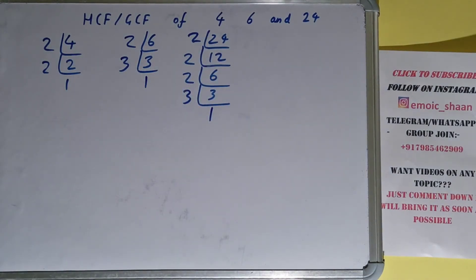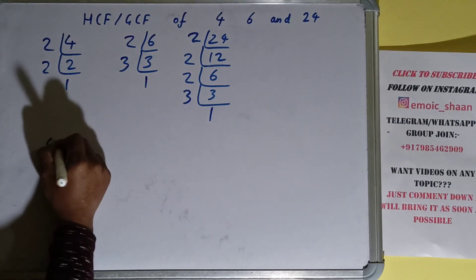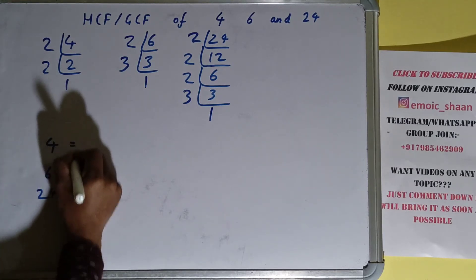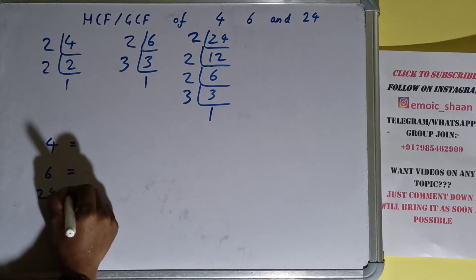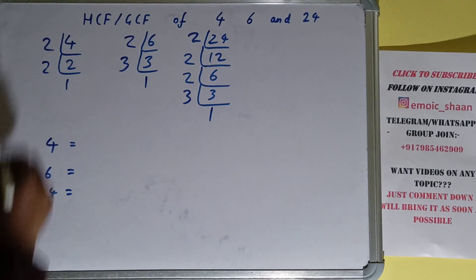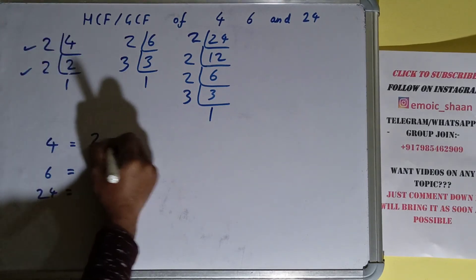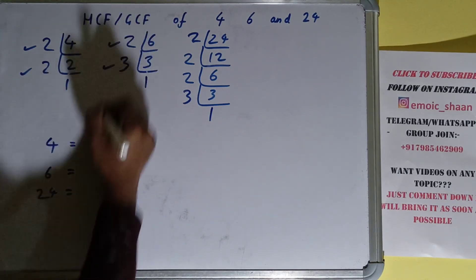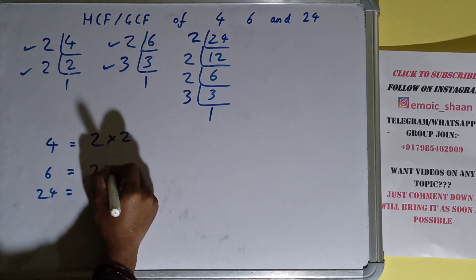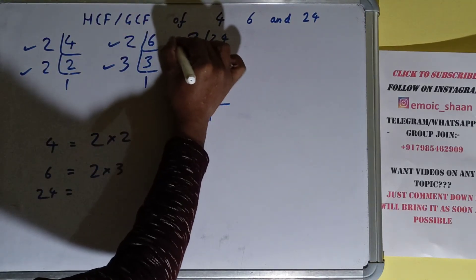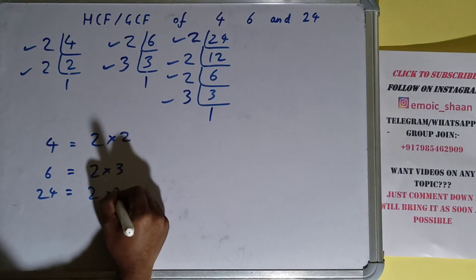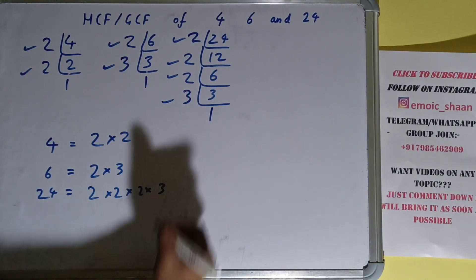So we are done with the prime factorization step. The next thing we need to do is write down each of the numbers with their respective prime factors. For 4, we got 2 × 2. For 6, we got 2 × 3. For 24, we got 2 × 2 × 2 × 3.